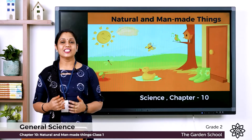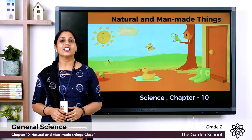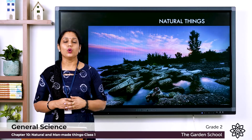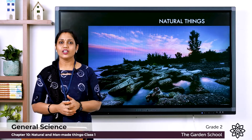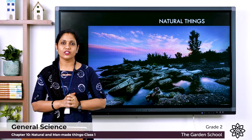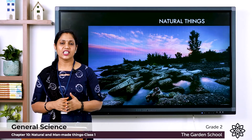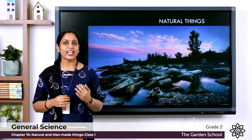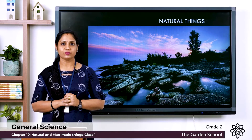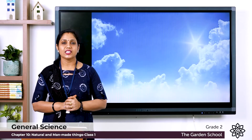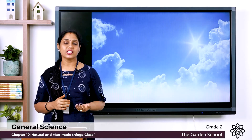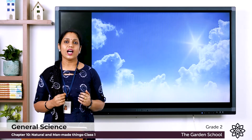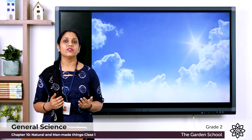Good morning children. Let's start a new chapter in science — Chapter 10: Natural and Man-made Things. We have already learned about the gifts of nature. Things like rivers, seas, and sky are all gifts of nature. The things that are found in nature are natural things. If we look at the sky, we can see clouds, the sun, stars, the moon — these are all natural things.